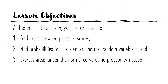Our lesson objectives: at the end of this lesson, you are expected to find areas between paired Z-scores, find probabilities for the standard normal random variable Z, and express areas under the normal curve using probability notation.